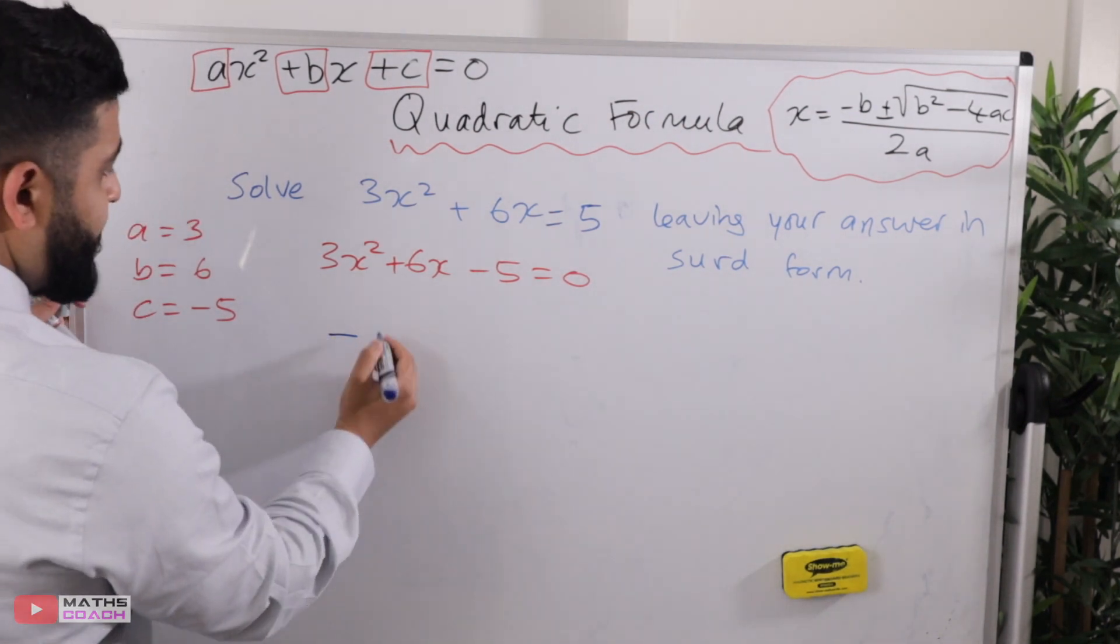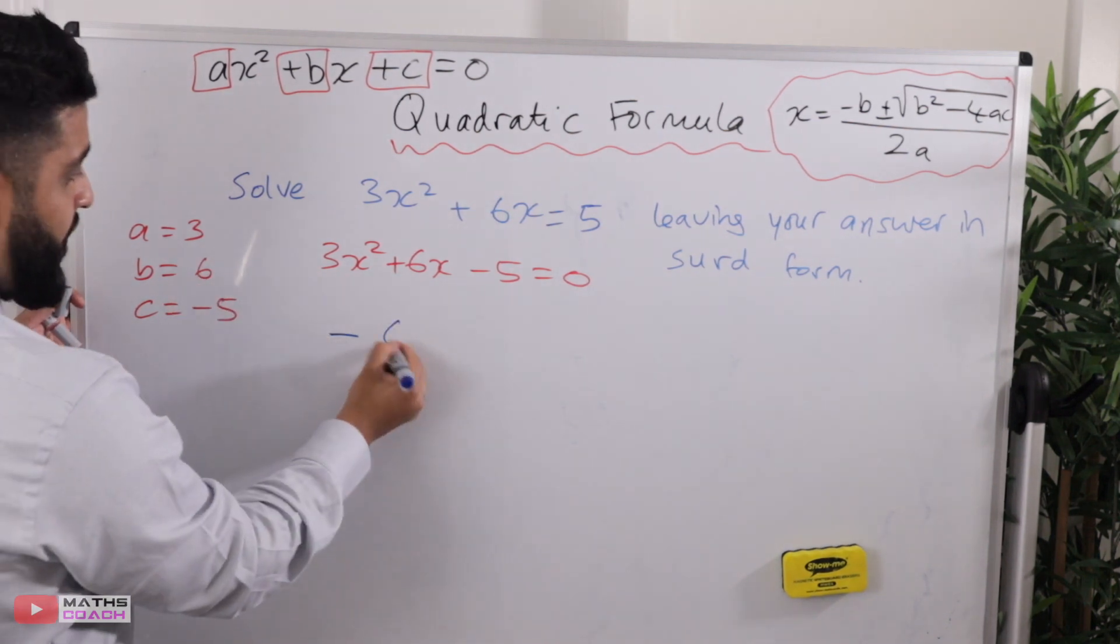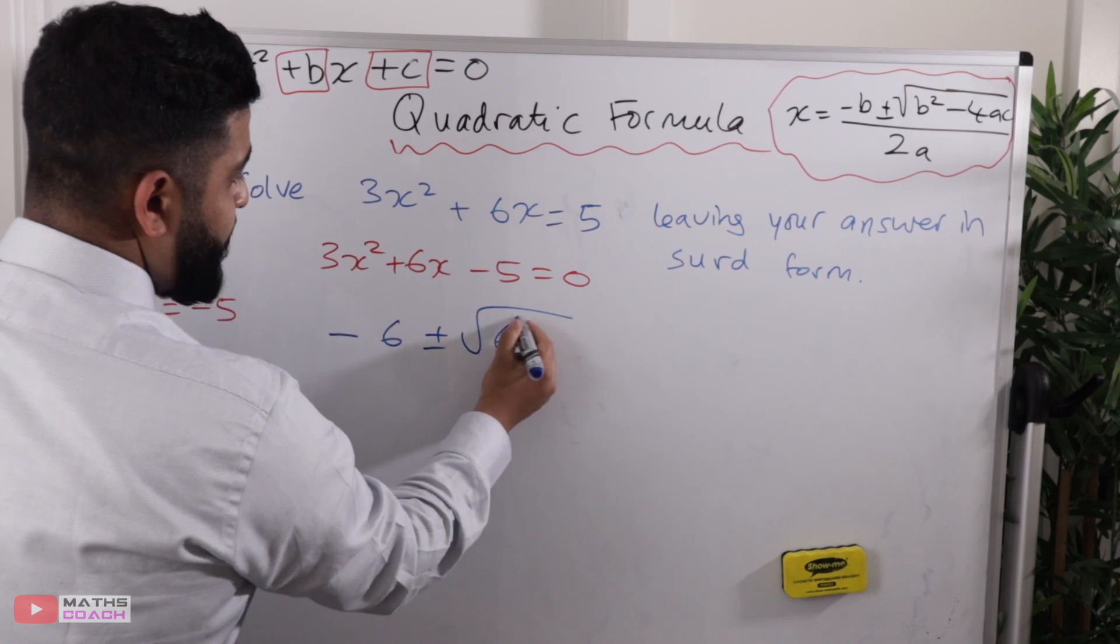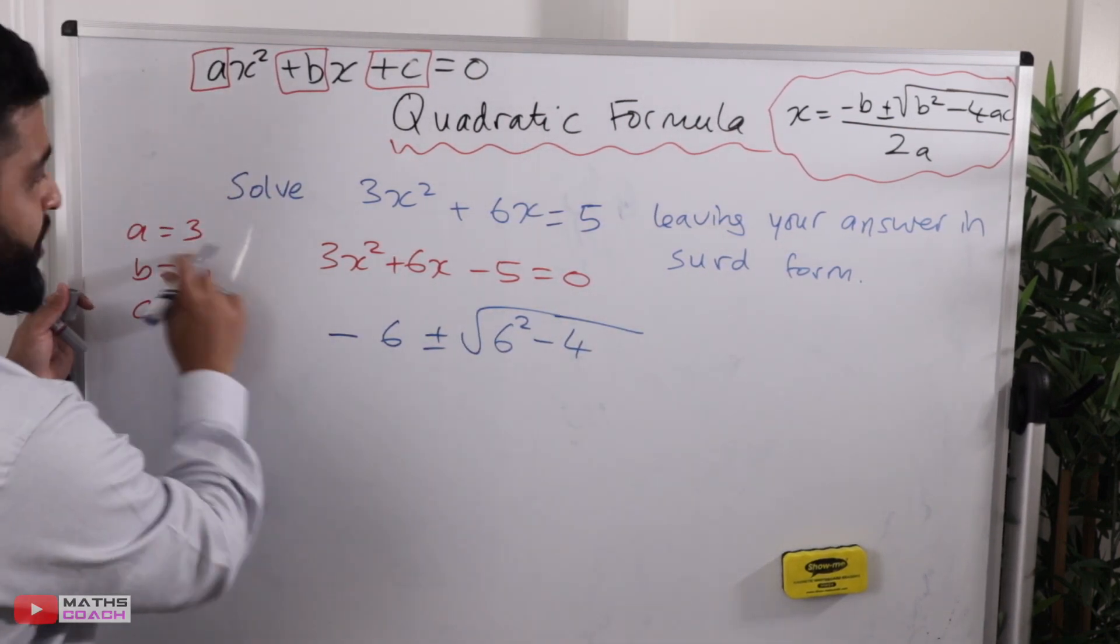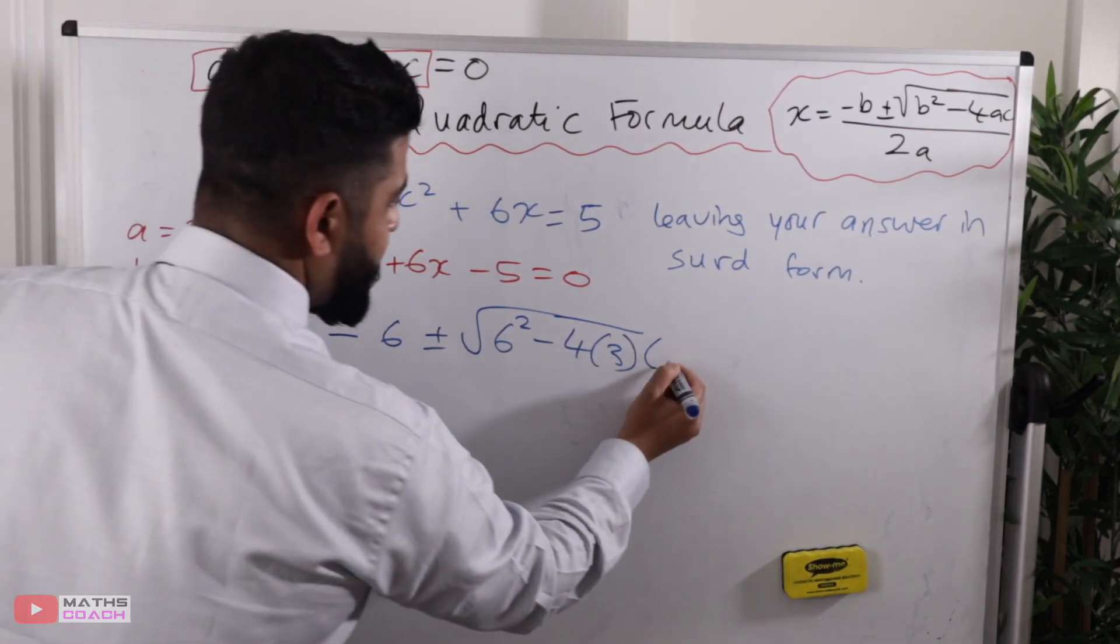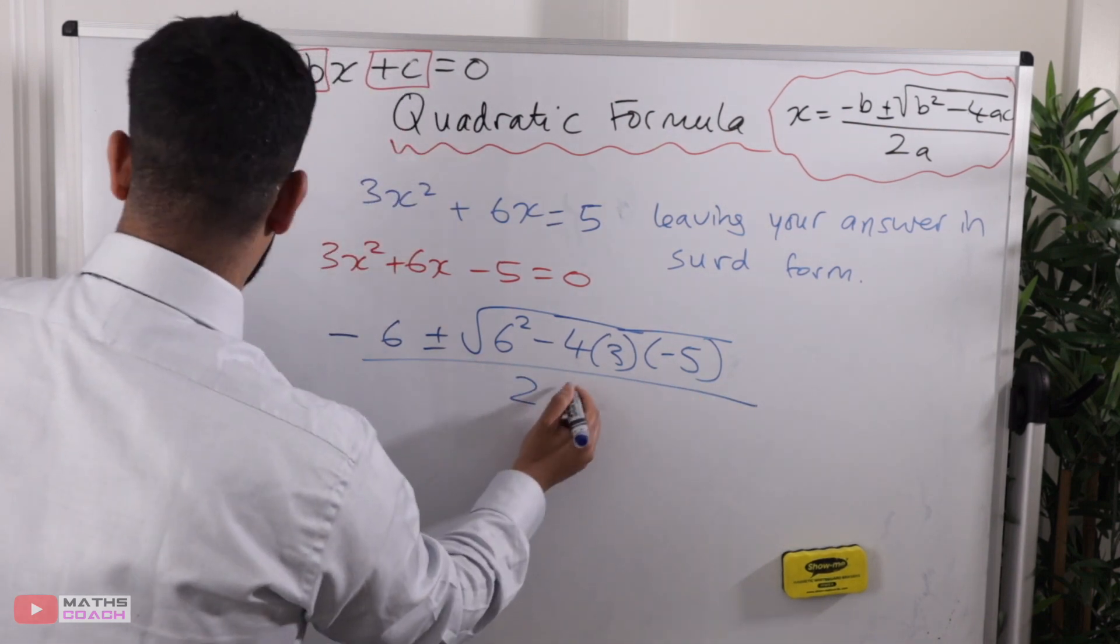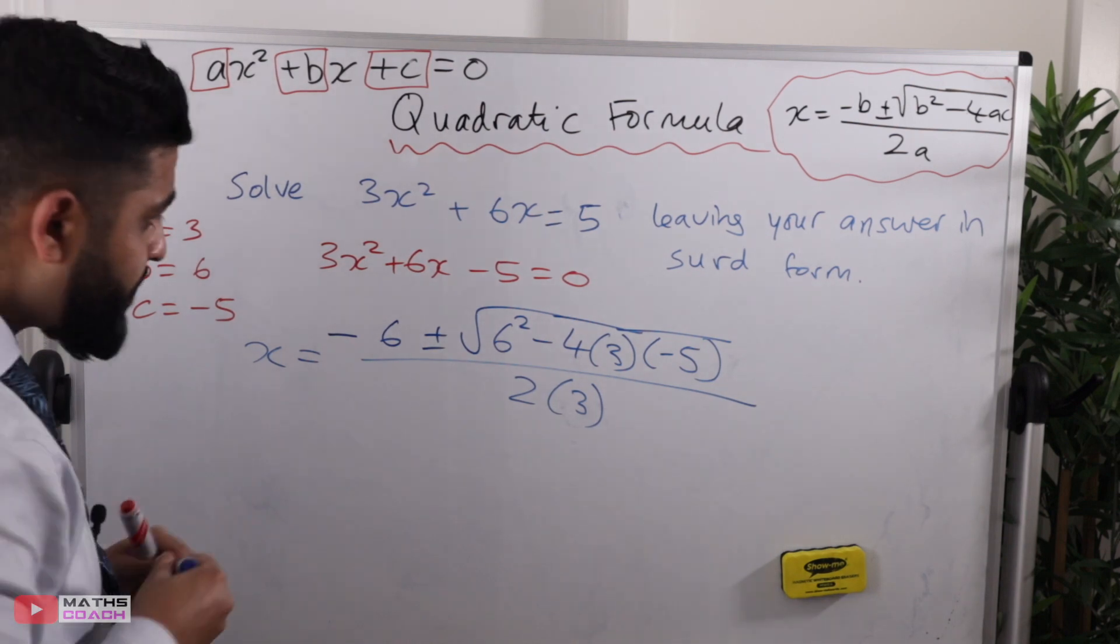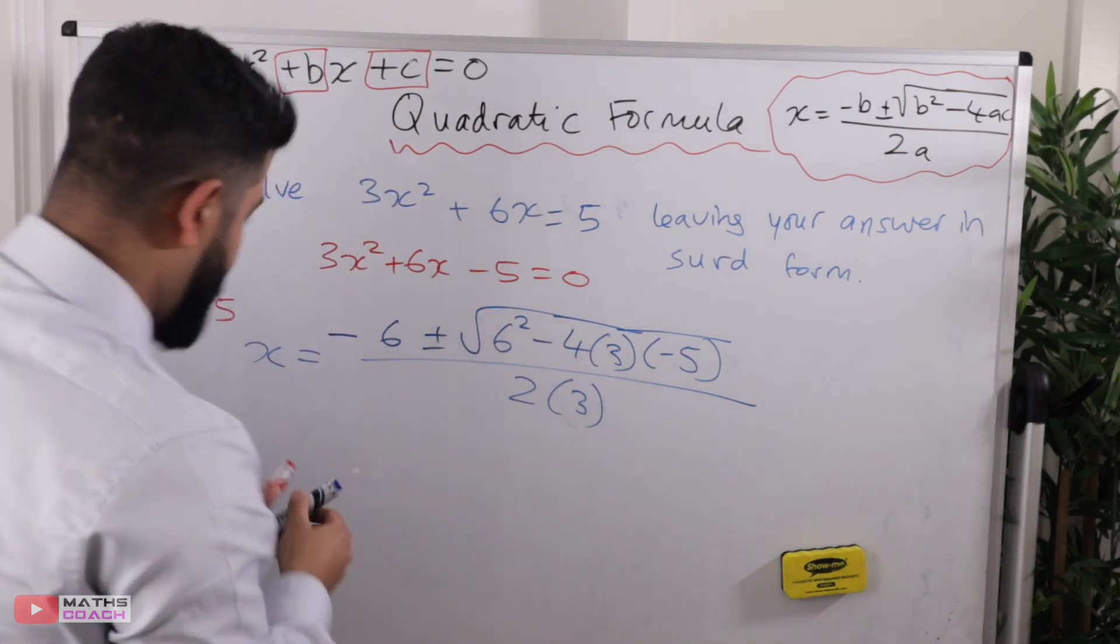So we have minus, which is part of the formula itself, and then minus 6, which is our B. Plus and minus B squared, which is 6 squared here, minus 4 times by A, which is 3, times by C, which is minus 5. That's all over 2 times 3, and that's what x is going to be. We are now going to work out everything individually.